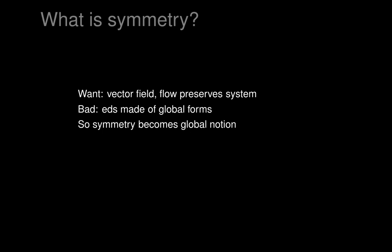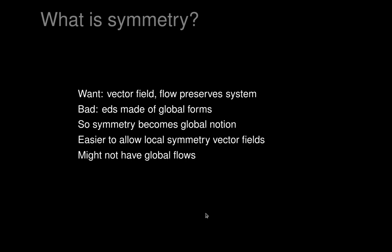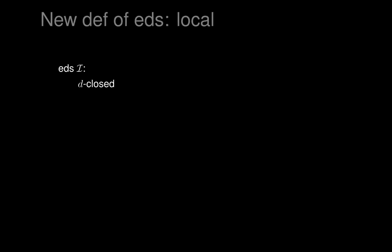So we're better off working with something much more local. In order to have a local definition for symmetries — as local vector fields that locally preserve the system — we need a local notion of exterior differential system. So it would be useful to throw out the previous definition and adopt a new, more localized definition. All of our theorems will remain true, and we'll be able to use this more local definition to give theorems about symmetries that are more easily stated. It's easier to allow local symmetry vector fields than a global definition of exterior differential system.